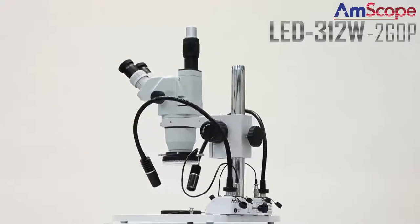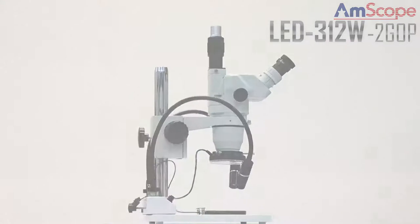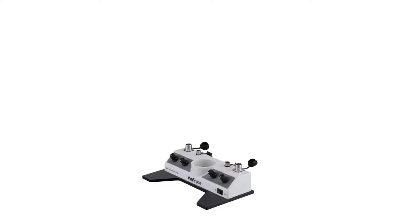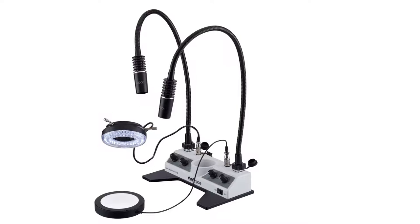The LED312W2GOP is a complete multi-purpose LED lighting system with incident lighting and transmitted lighting. The lighting system comes with a control unit, two gooseneck lamps, a ring light, and an illuminated stage plate.